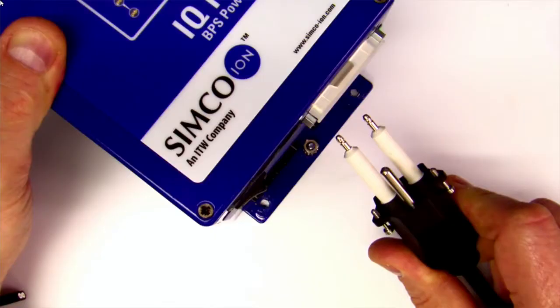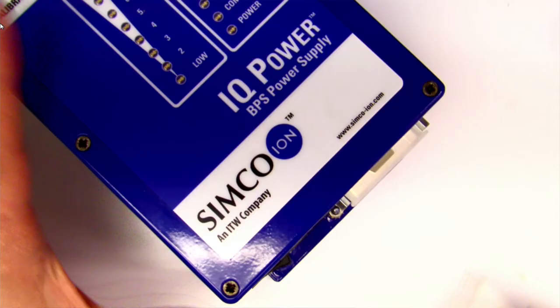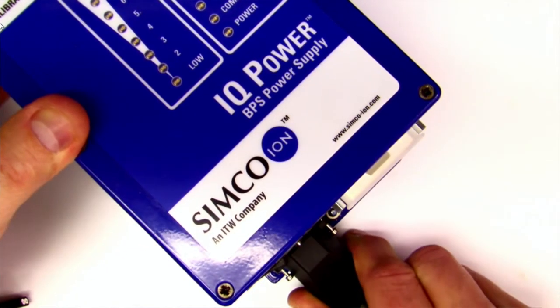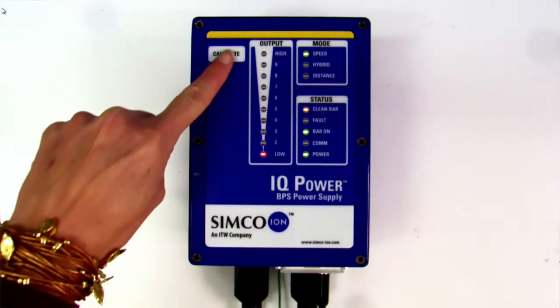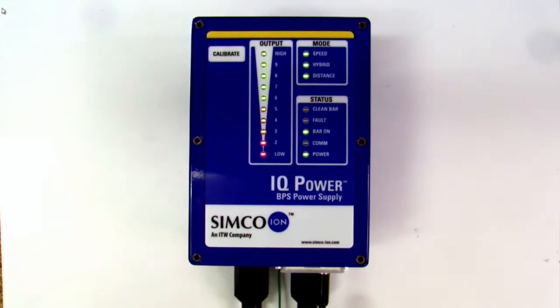Connection to the IQ Power BPS is simple. The patented high voltage connector system configures the correct output on the power supply. Calibration is automatic and only requires hitting the calibration button on the face label of the unit. This is another patented feature that only Simcoe Ion can offer.